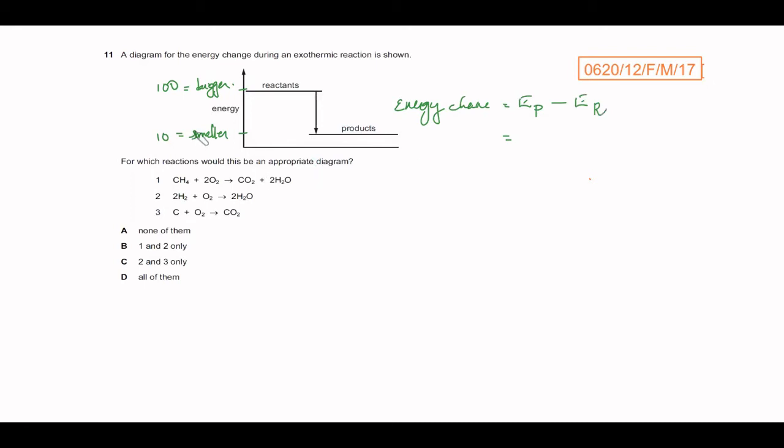So energy of the products, we have assumed it to be 10, minus energy of the reactants, we've assumed it to be 100. So here we will be getting minus 90 as the value. The negative sign indicates it is an exothermic reaction.